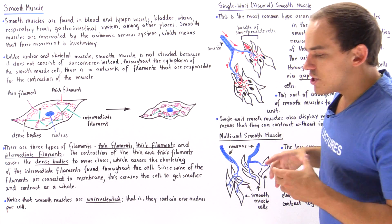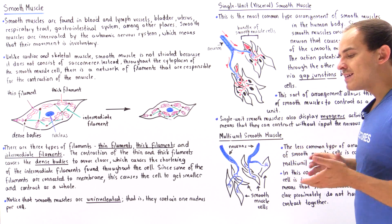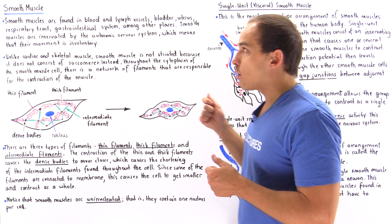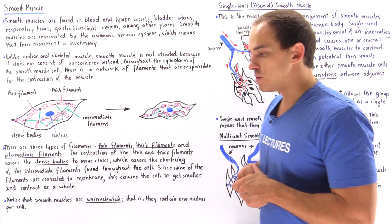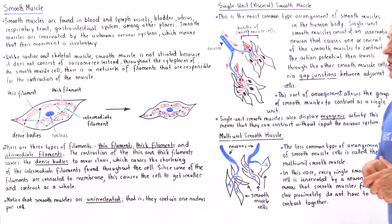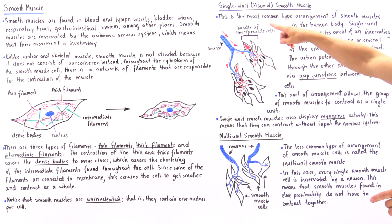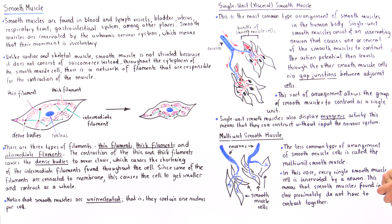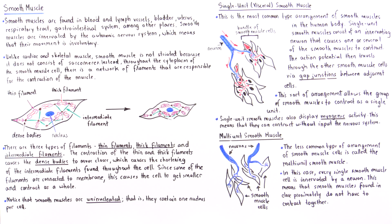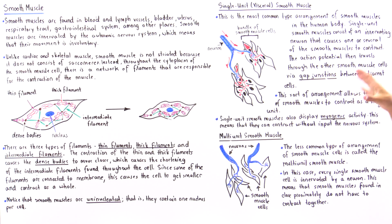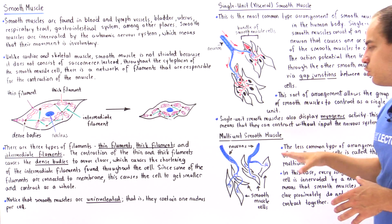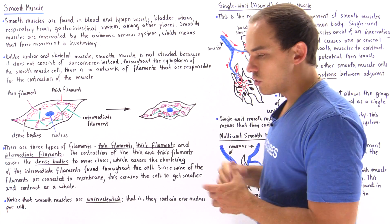There are two main types of arrangements of smooth muscle cells in the human body. One is known as the single unit smooth muscle, also called the visceral smooth muscle. The other type of arrangement is known as the multi-unit smooth muscle.